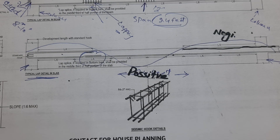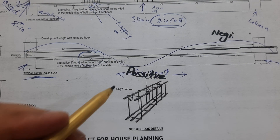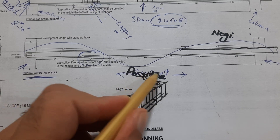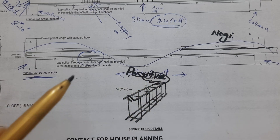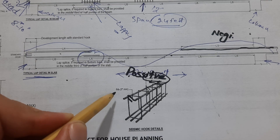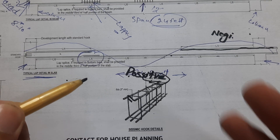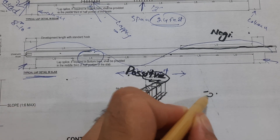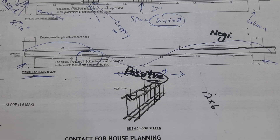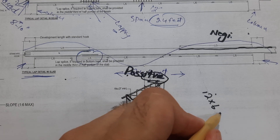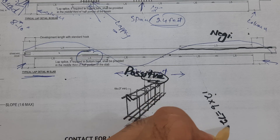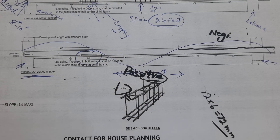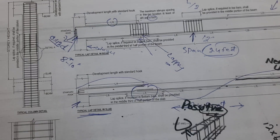Now let me show you the seismic hooks. The hook should be bent at 135 degrees. As you can see, the extension is the greater of 3 inches or 6d, where d is the diameter of the bar. For example, if the diameter is 12 mm, multiply by 6 to get 72 mm, which is approximately 3 inches minimum.